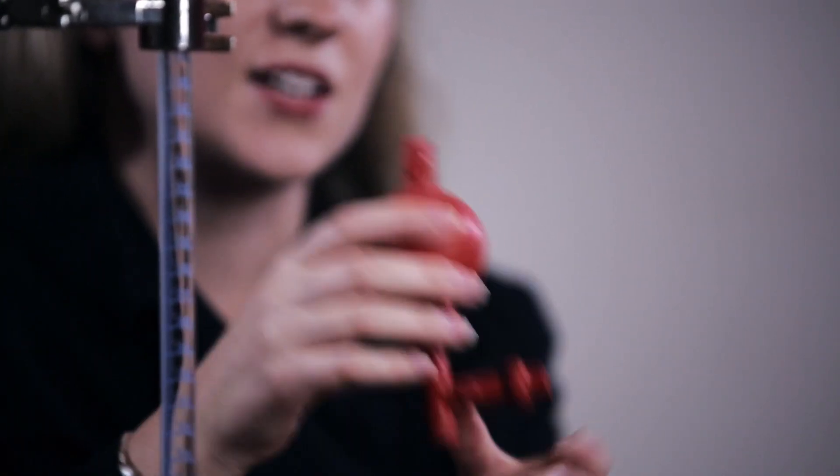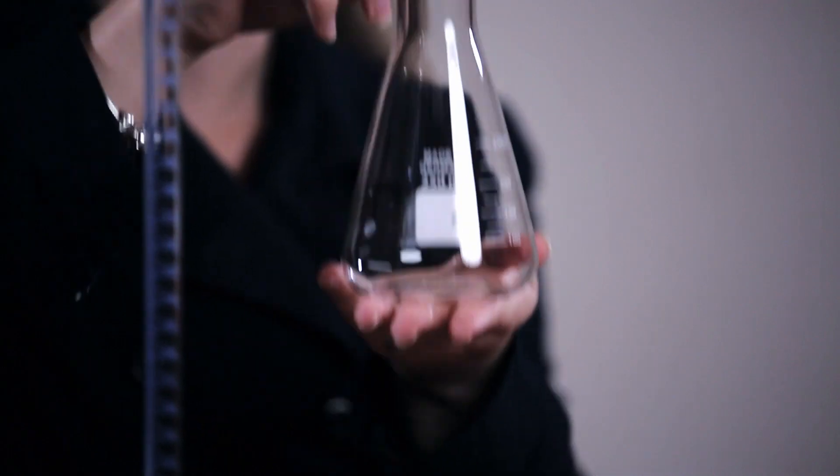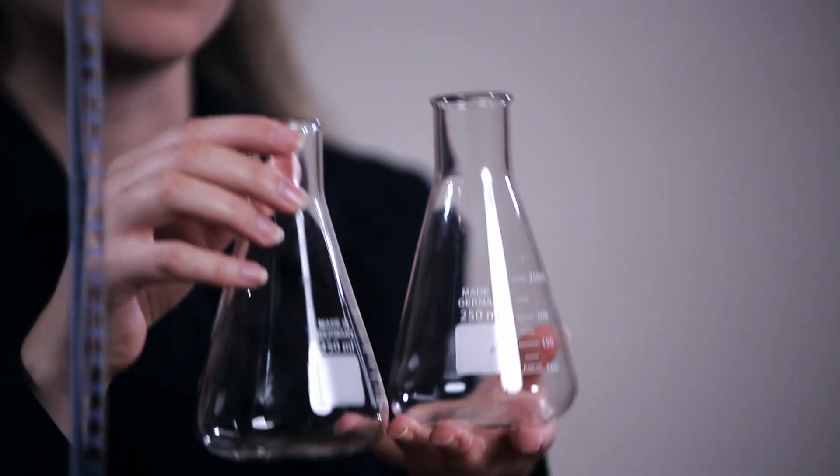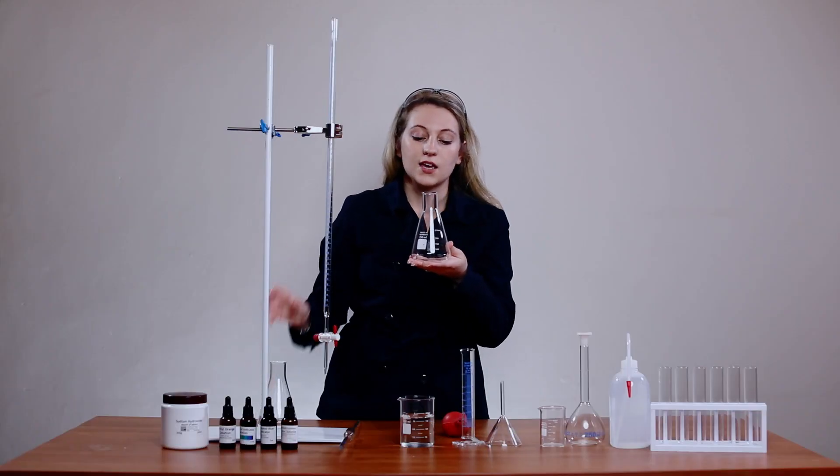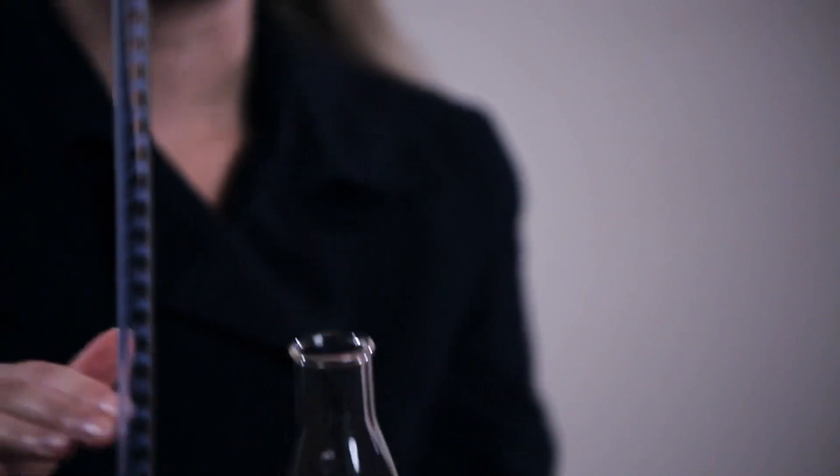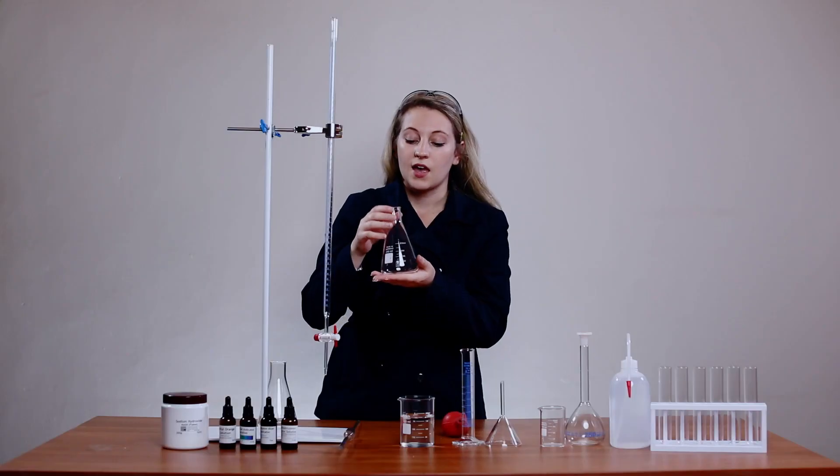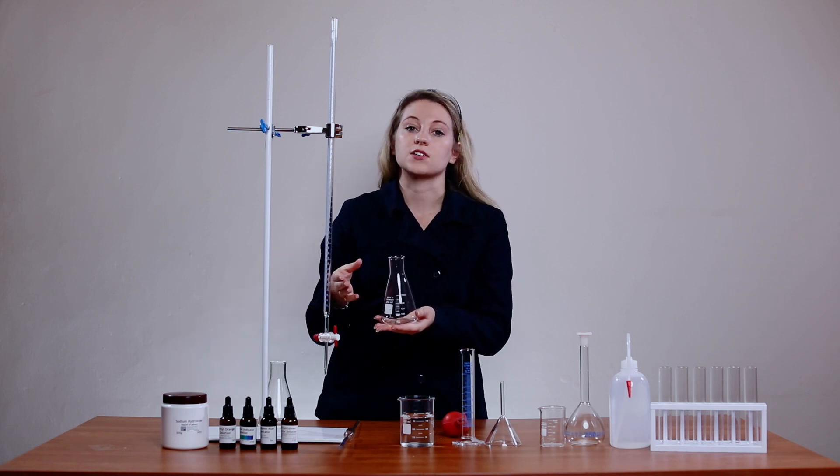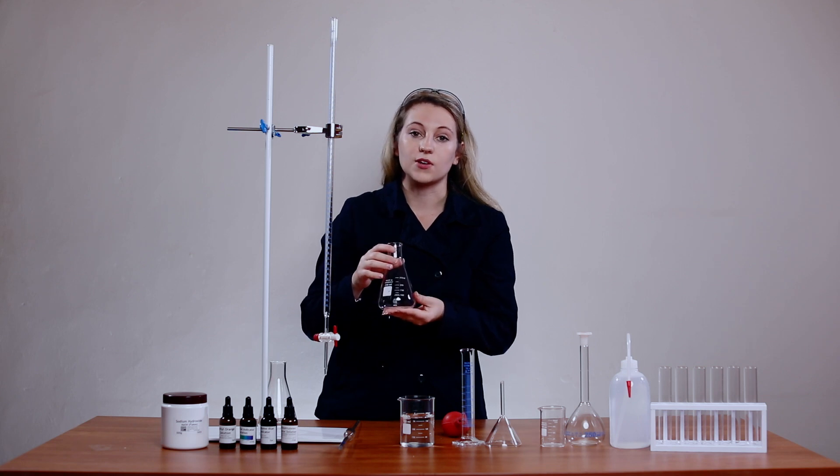You also require Erlenmeyer flasks. The reason why you need more than one is because when you do a titration your first titration is always going to be your rough one and you're going to do at least three accurate titrations, get the average volume, and that will be the volume that you will use.